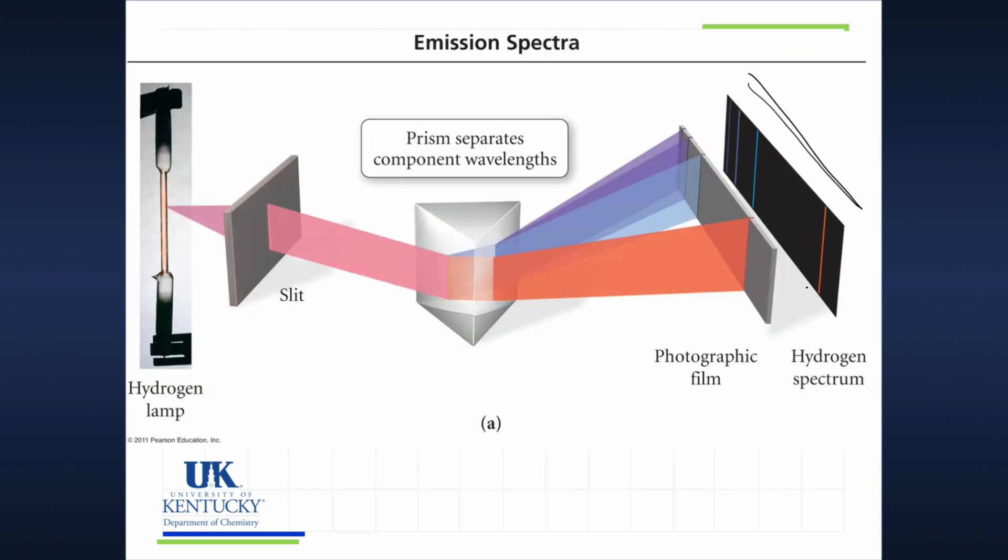So before we go to the next slide, this is what they observed. They observed that there is some connection between the light, the energy passing through the electrons within that hydrogen gas and the light that we see. So once again, a scientist observed something.